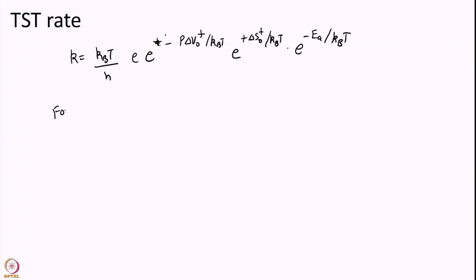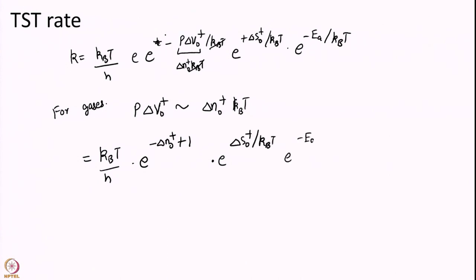Now, for gases, even for liquid it can be partially true, P delta V naught we will approximate as by ideal gas. P V equal to N KT, ideal gas law. So, that is what we are going to do. It is just a crude approximation really. And so, I will get P delta V I will write as delta N naught KT. KT and KT will cancel here. So, I will get e to the power of minus delta N naught dagger plus 1 into e to the power of delta S naught dagger over KT into e to the power of minus EA over KT.